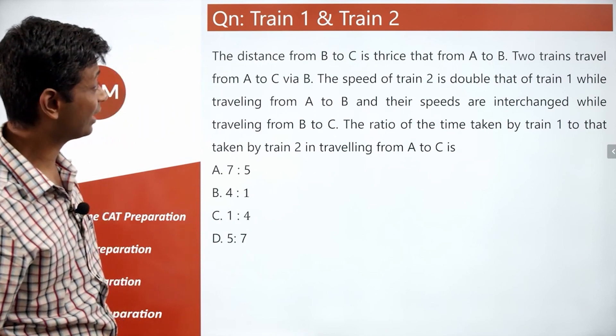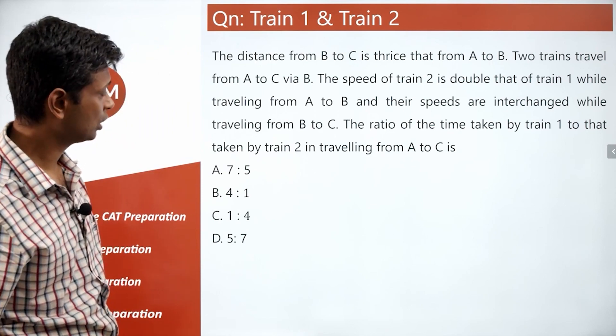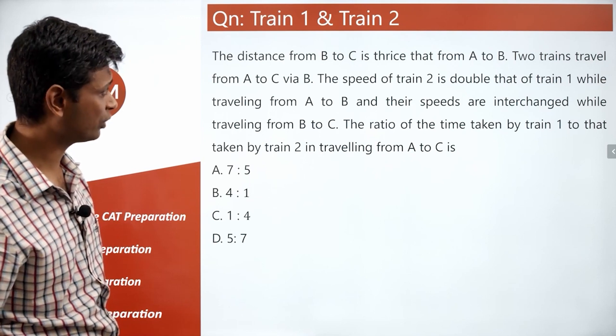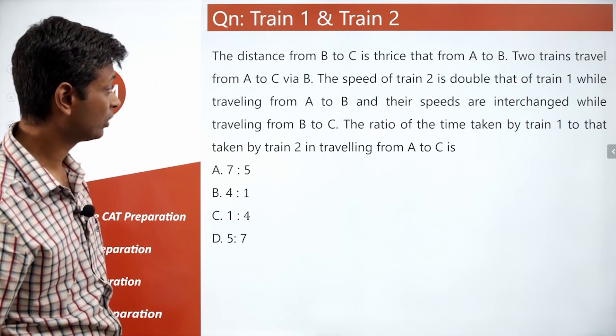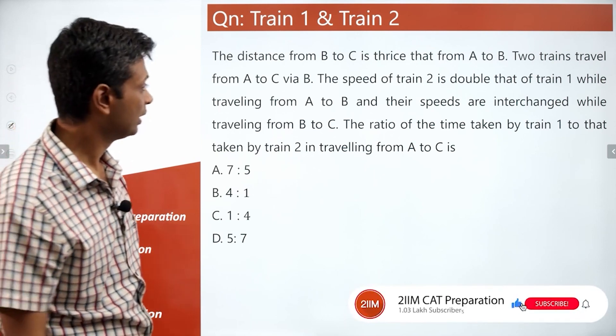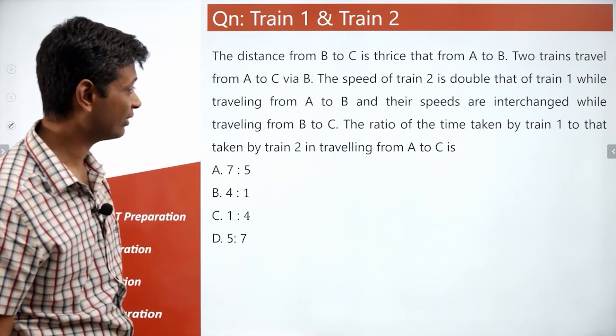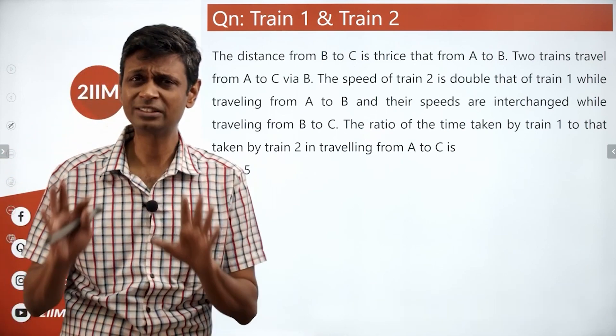The distance from B to C is thrice that from A to B. Two trains travel from A to C via B. The speed of train 2 is double that of train 1 while traveling from A to B and their speeds are interchanged while traveling from B to C. The ratio of the time taken by train 1 to that of time taken by train 2 in traveling from A to C is an interesting question, simple question.